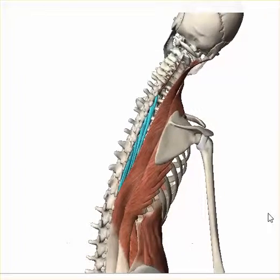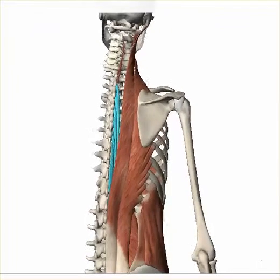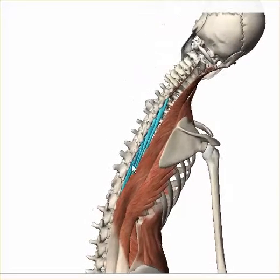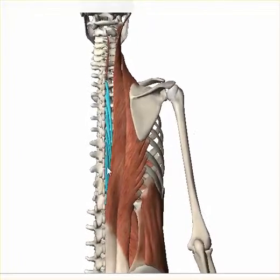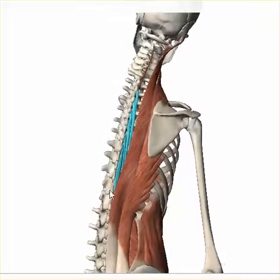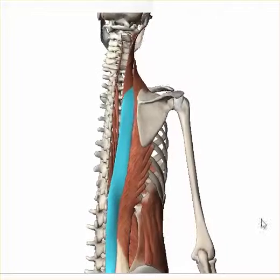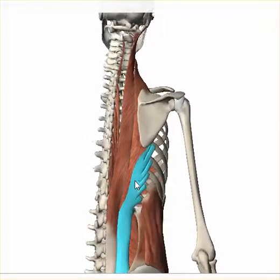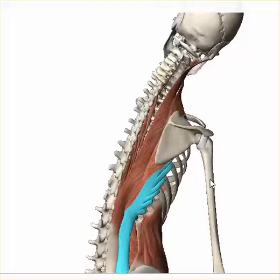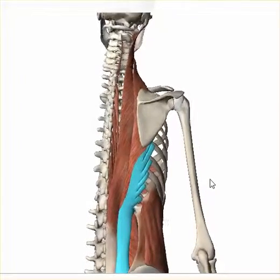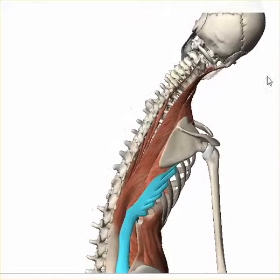The erector spinae is this large muscle here, and it is separated into three layers oriented by how close they are to the spinal column. The layer highlighted in blue is the spinalis muscle. The next one out is the longissimus, and the most lateral is the iliocostalis.